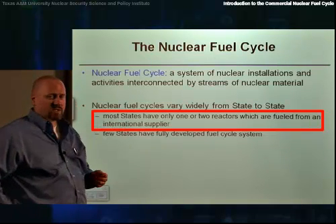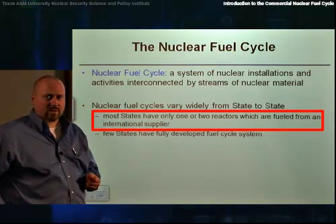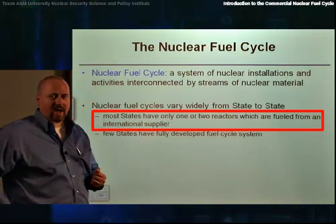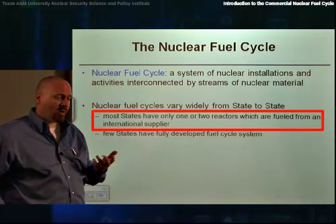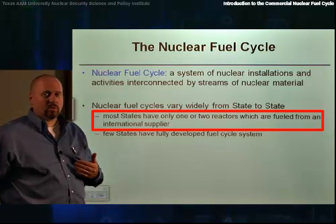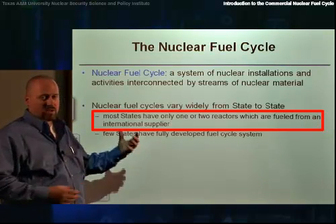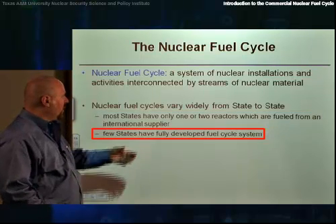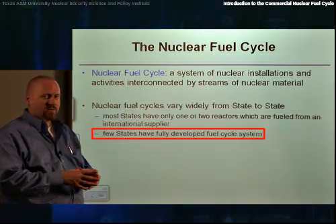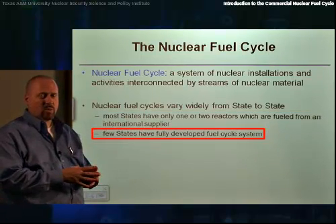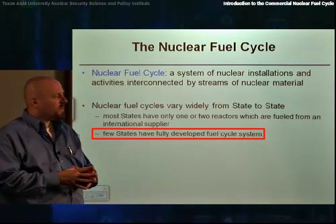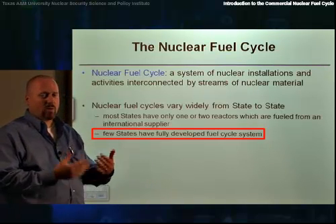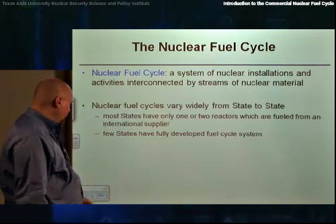But most states have a much simpler nuclear fuel cycle. In many cases, those states will only have one or two reactors, mainly power reactors, in which they'll import nuclear material into the country and then potentially export waste material out of the country. A few states also have just the front end portion of the nuclear fuel cycle, where they'll actually produce their own nuclear fuel, but they won't have what we call the back end of the nuclear fuel cycle.